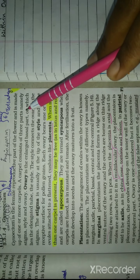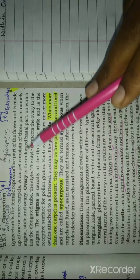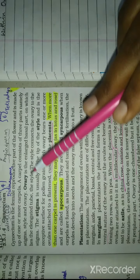Gynoecium is the female reproductive part of a flower and it is made up of one or more carpels. A carpel consists of three parts: stigma, style, and ovary.